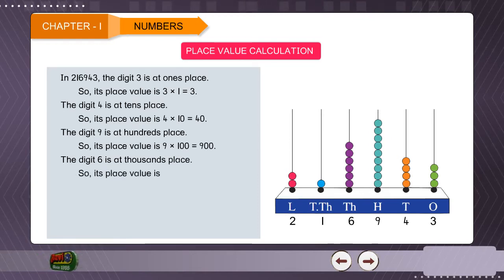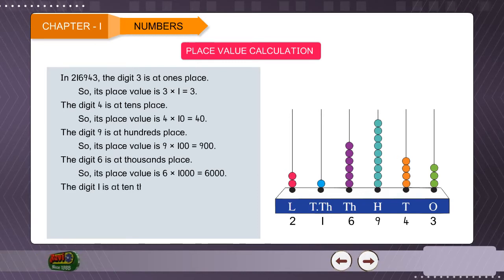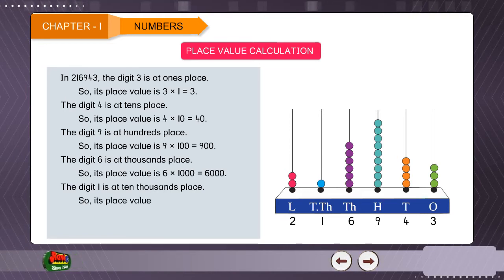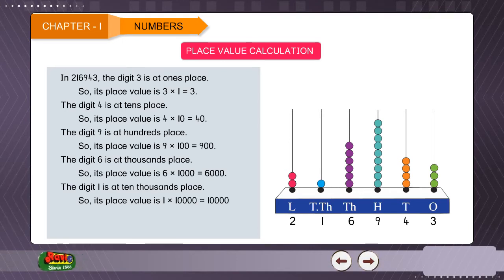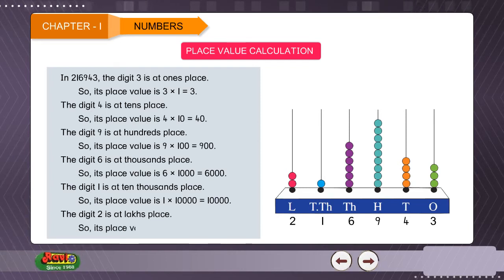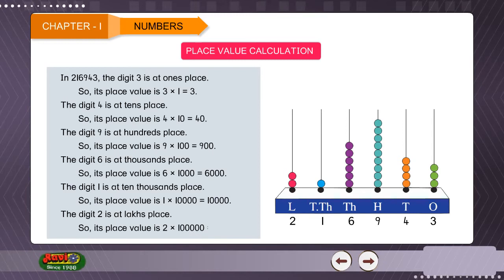The place value of 6 is 6 × 1000 = 6000. The digit 1 is at the 10,000's place, so its place value is 1 × 10,000 = 10,000. The digit 2 is also at the lakh's place, so its place value is 2 × 1,00,000 = 2,00,000.